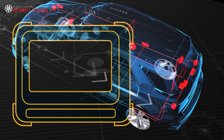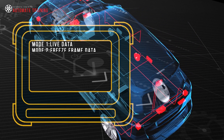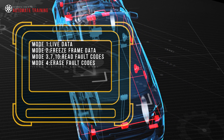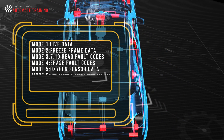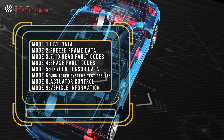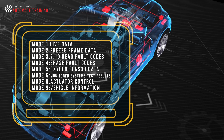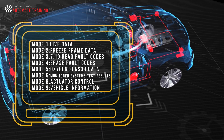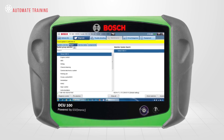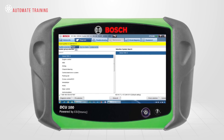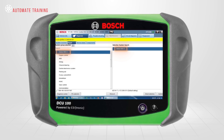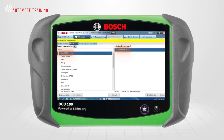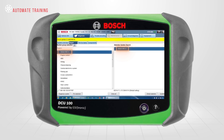Depending on the scan tool used, we'll determine how this OBD information is displayed, but in essence the generic OBD program will cover multiple software modes. The generic OBD program is a dedicated program when compared to the vehicle-specific software selection.